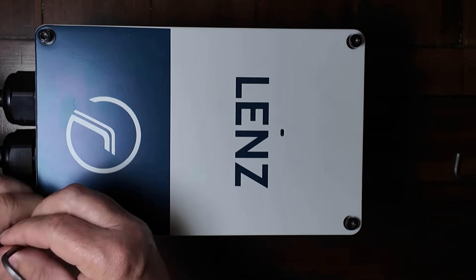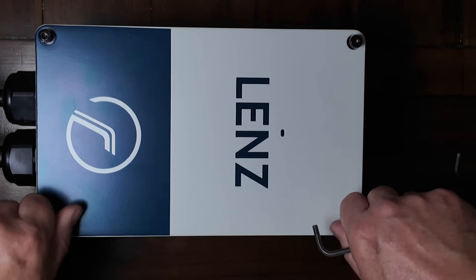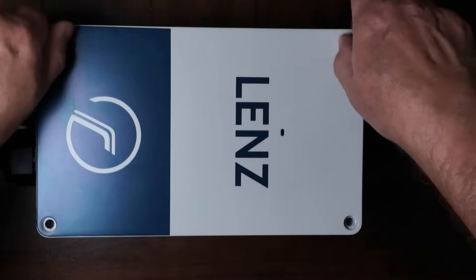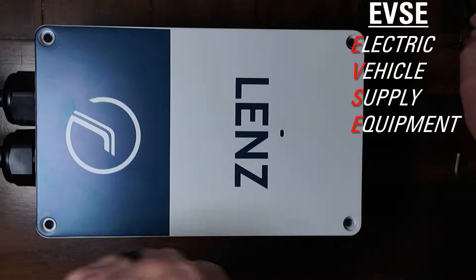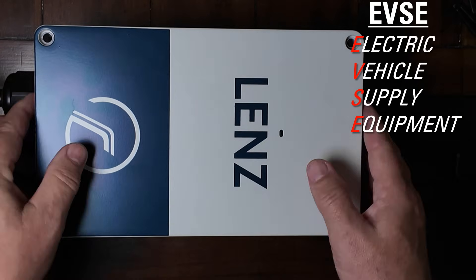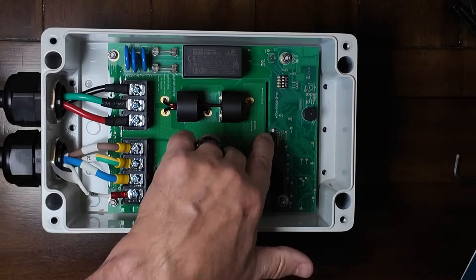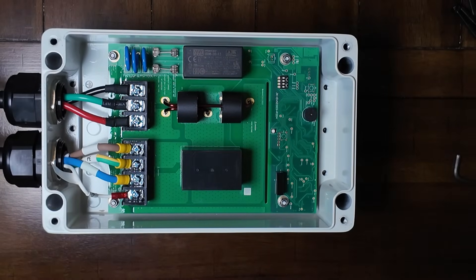Now, just a quick note before we dive in. Technically, this isn't a charger. The actual charger lives inside your car. What we're talking about here is an EVSE, a fancy acronym for electric vehicle supply equipment. It safely delivers power from your home to your vehicle's onboard charger, and it's a critical part of any EV owner's toolkit.